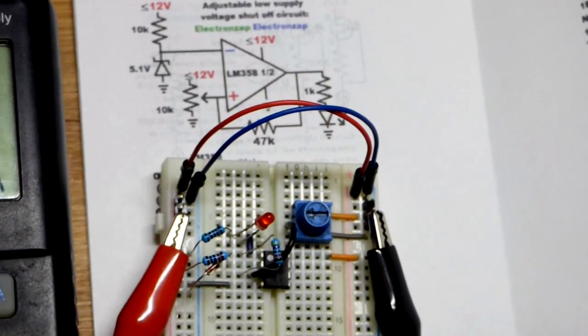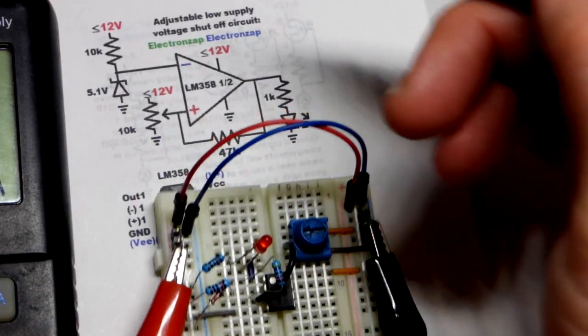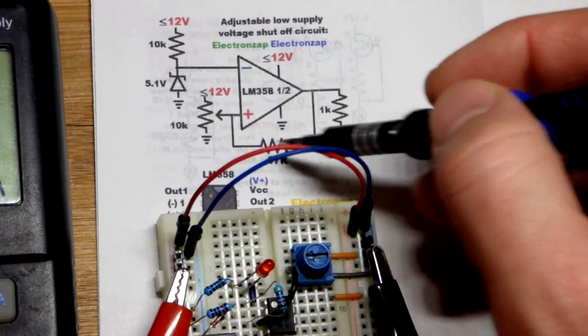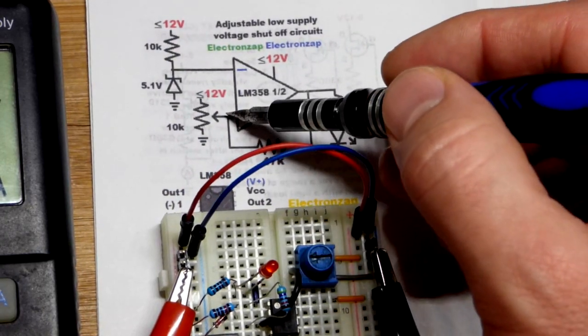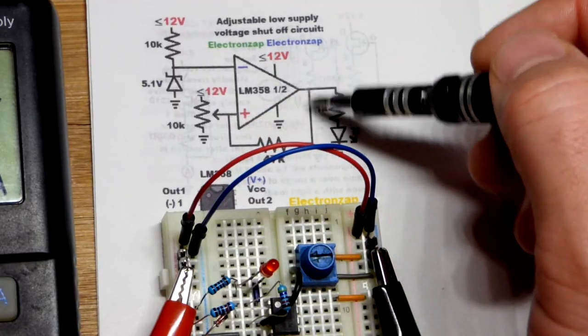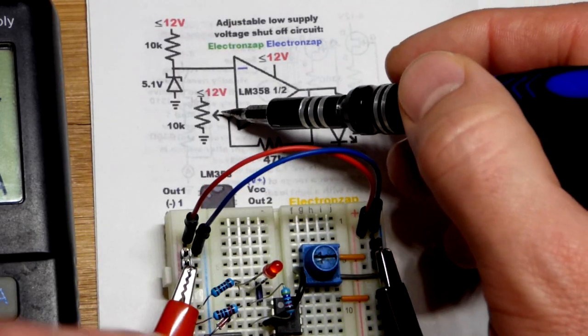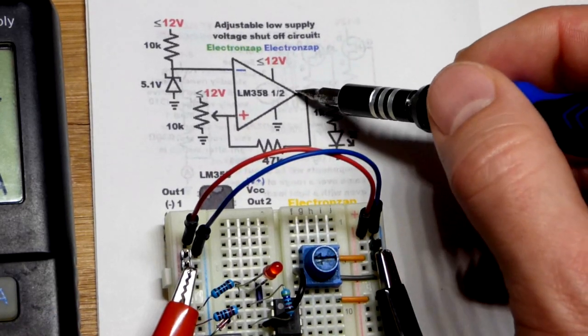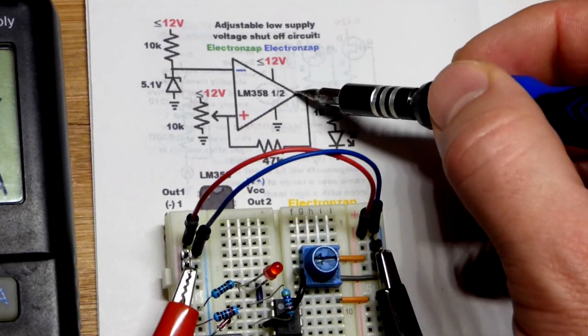Remember it does have that positive feedback. So when the output has something headed back towards the non-inverting input, the plus right there, that's called positive feedback. That helps lock the output in place a little bit. Not locked like you can't break it, but it helps maintain it.